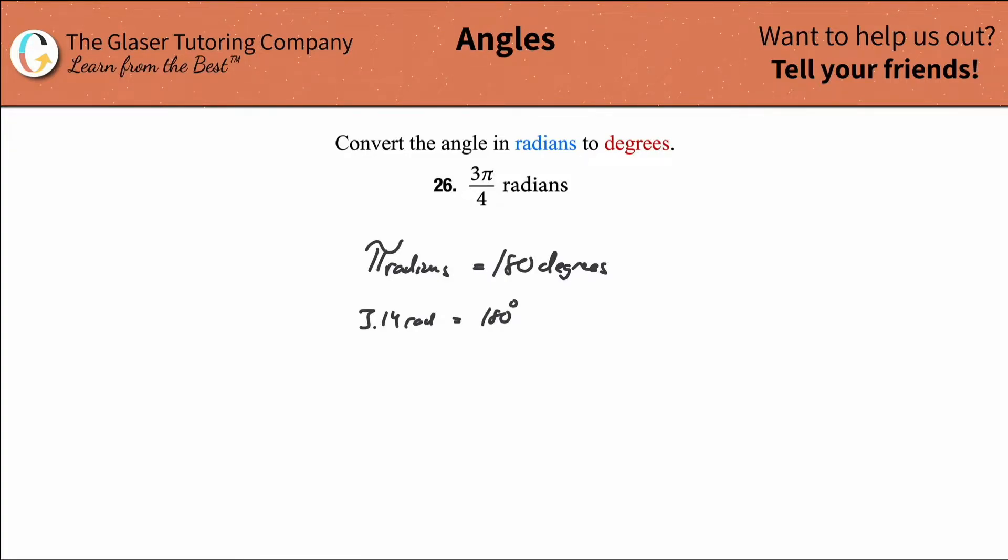If you were to divide both sides by 3.14, what you would find is basically that one radian is equivalent to roughly 57.3 degrees.